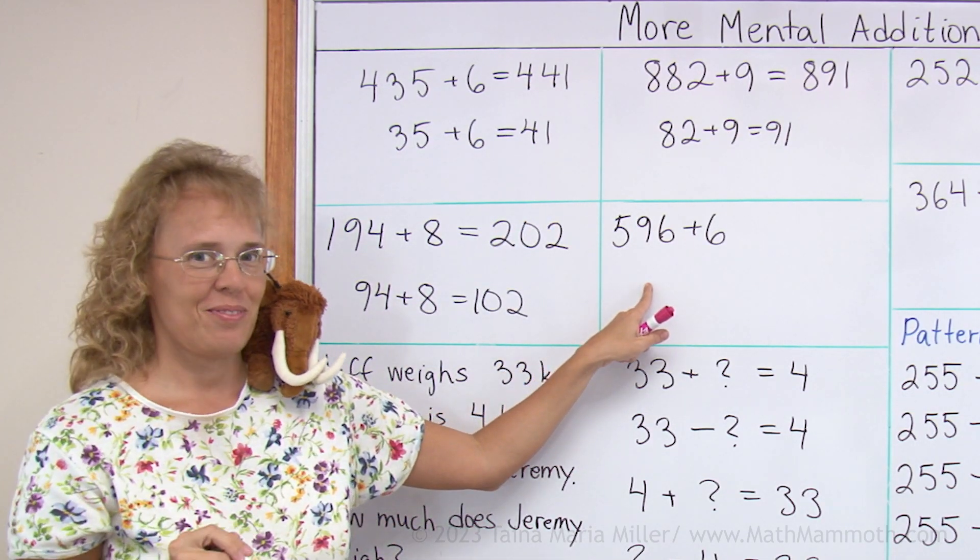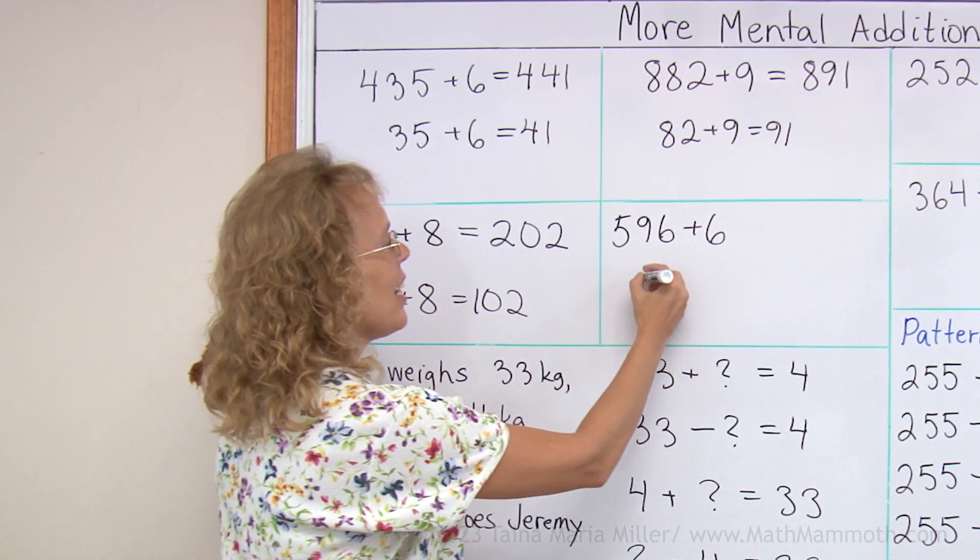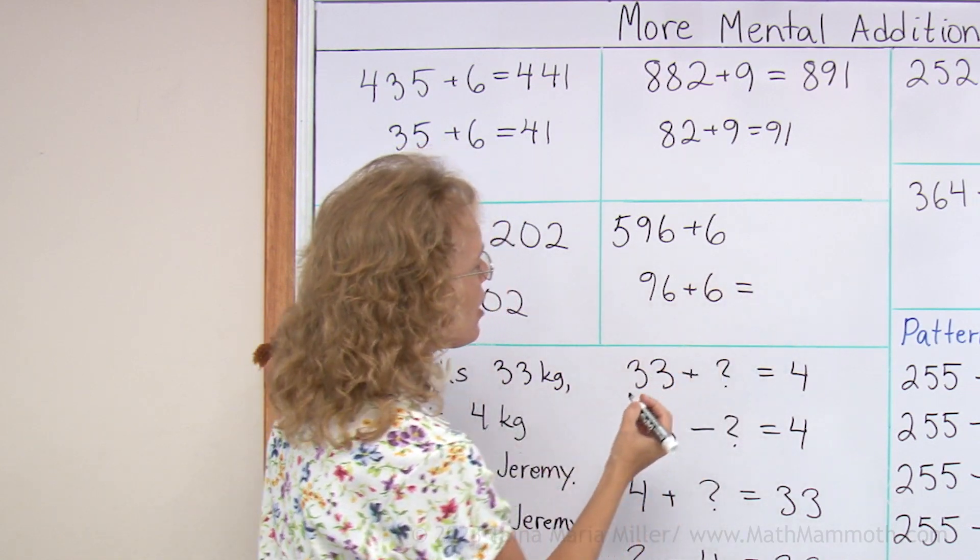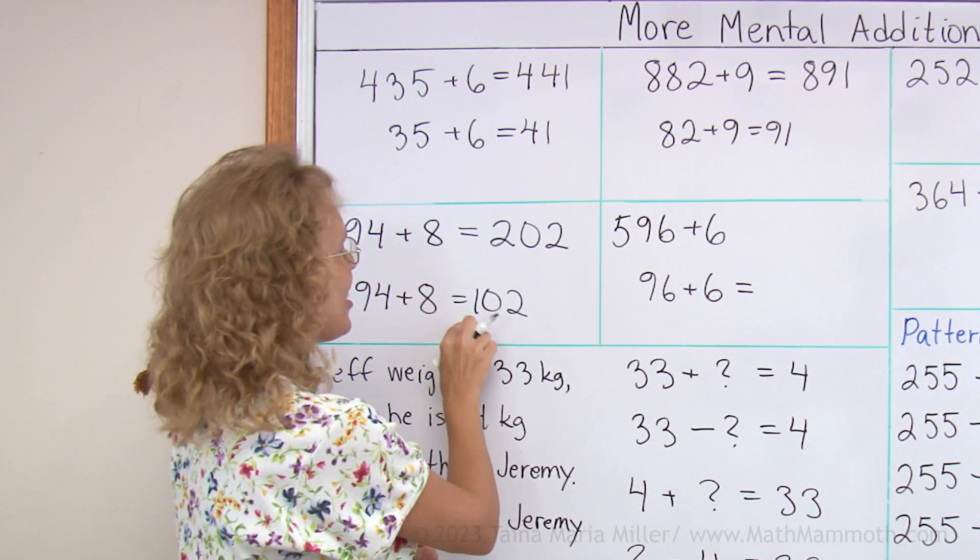Try that one on your own. 96 plus 6. Let's solve that first. Over here 6 and 6 is 12. Again, okay. So actually I get the same as here.